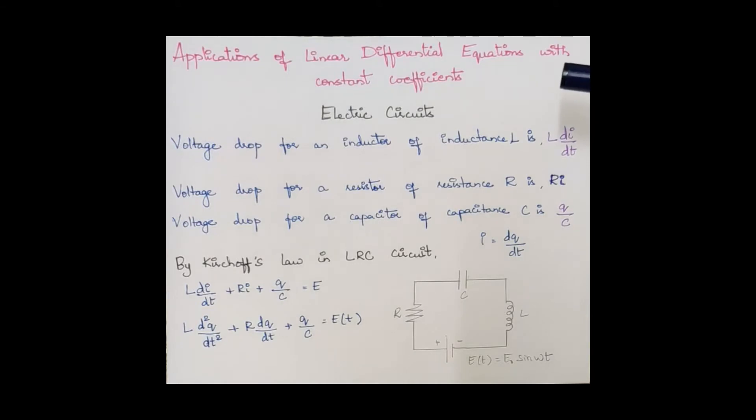Voltage drop for an inductor of inductance L is L(di/dt). For a resistor of resistance R, it's Ri. And for a capacitor of capacitance C, it's q/C. We know that current is the change in charge with respect to time.